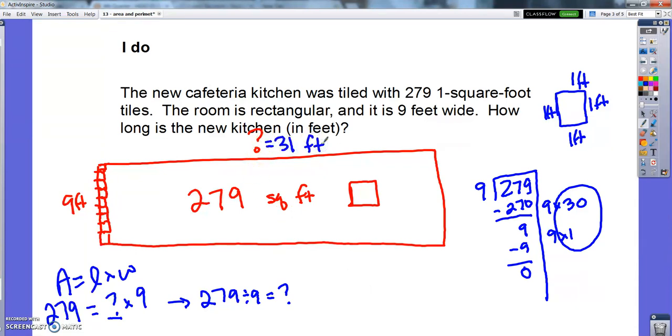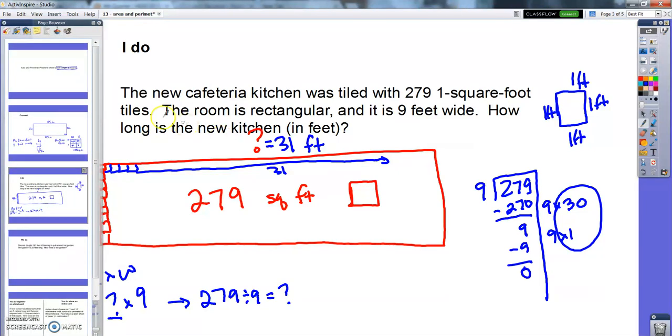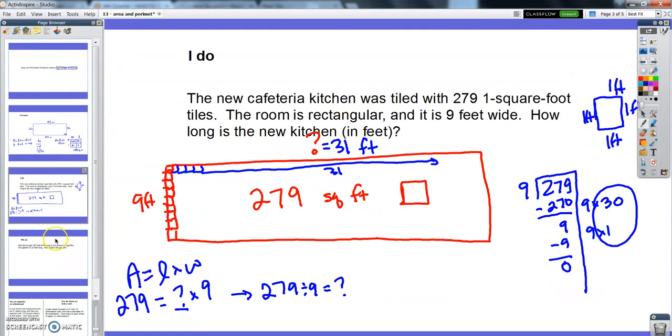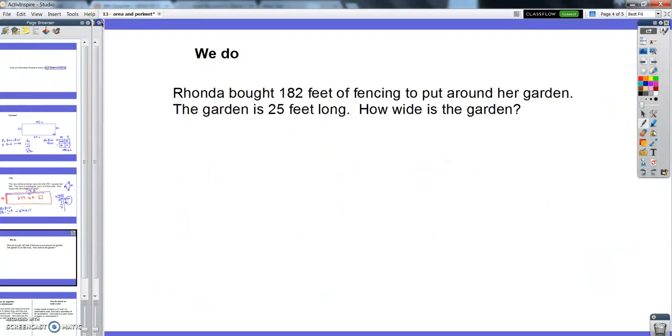Nice cafeteria. So if I made 31 rows of these tiles, I would make 279 altogether. So that's kind of a reverse area and perimeter problem. You get the area, you get the side, you figure out the other side. Alright, so hopefully not too bad. Let's do one together. Open your notebook up.